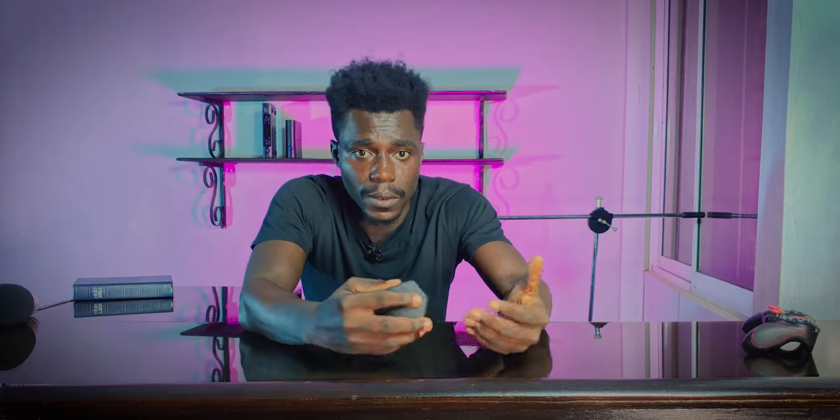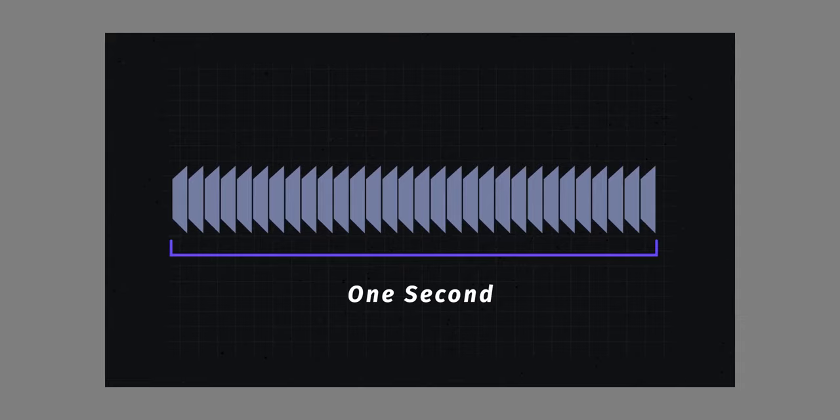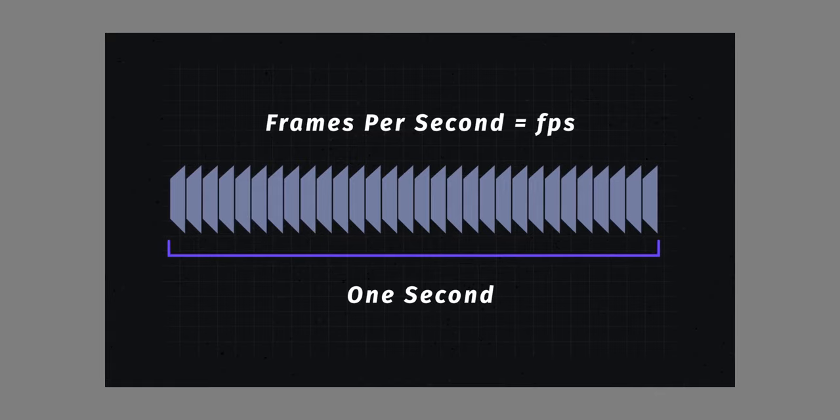There are a couple of theories on how this works, but the short answer is: when images are shown fast enough, our brain loses the ability to see individual frames and blends them together into a single image. The number of individual frames shown within one second is known as frame rate, expressed in frames per second or FPS.